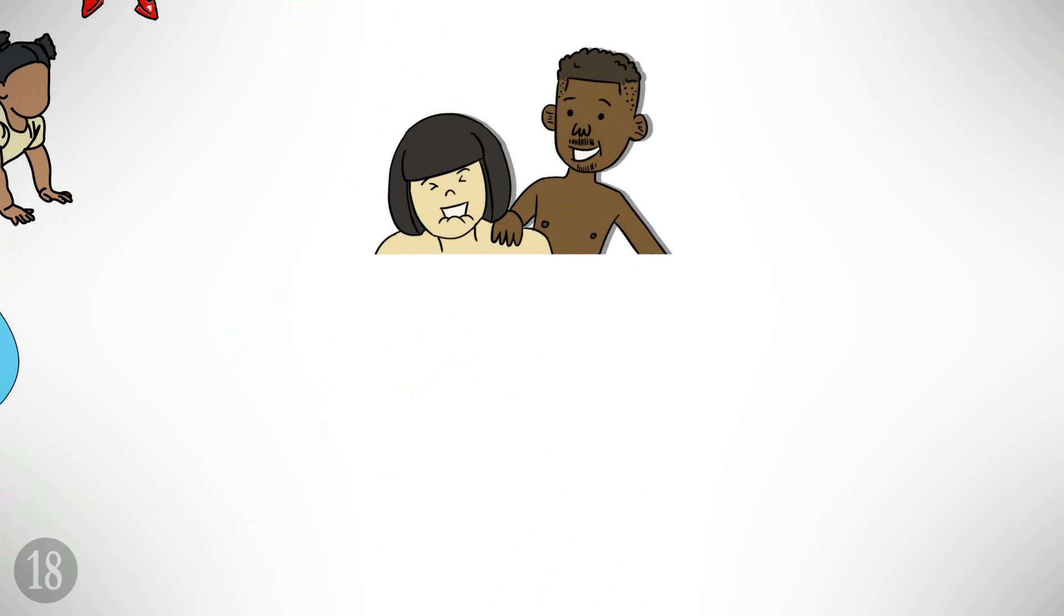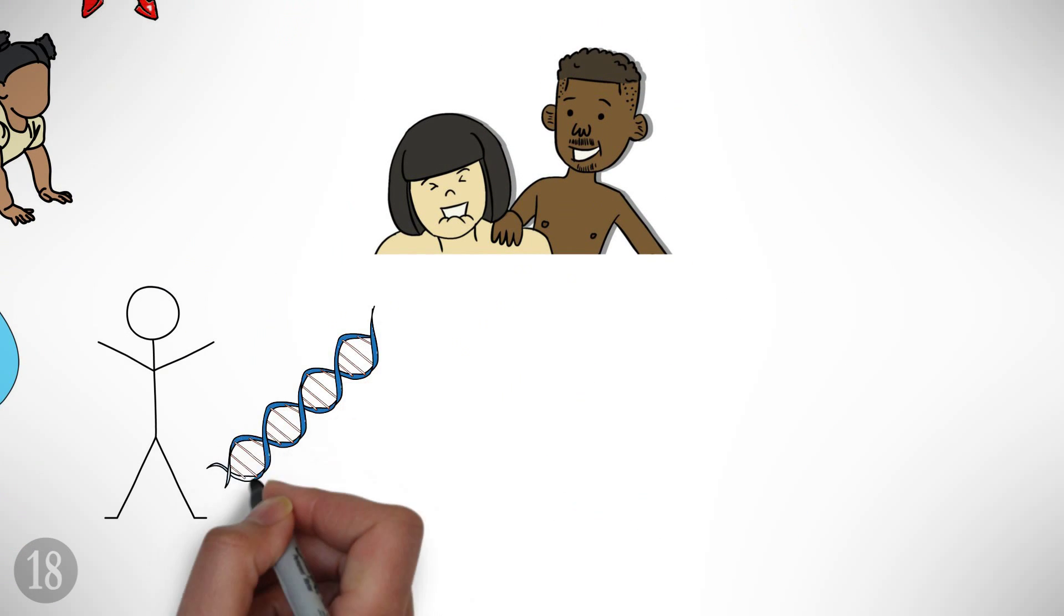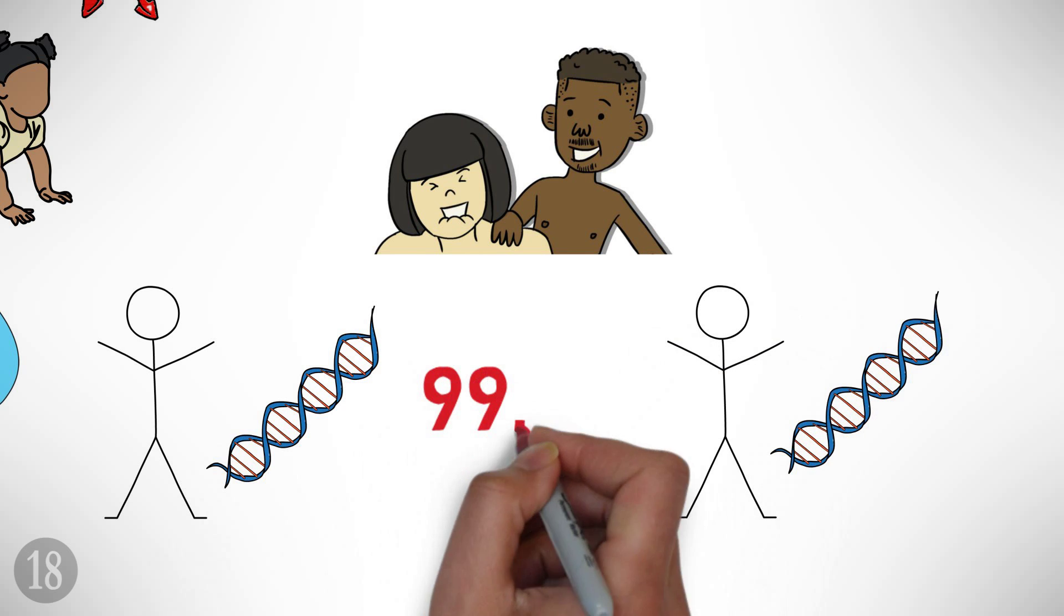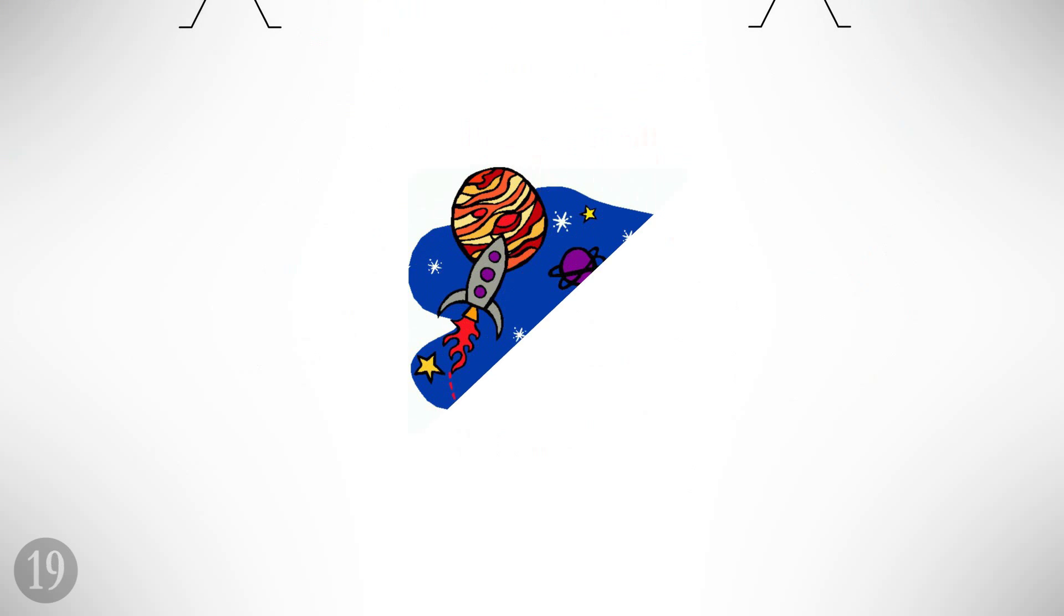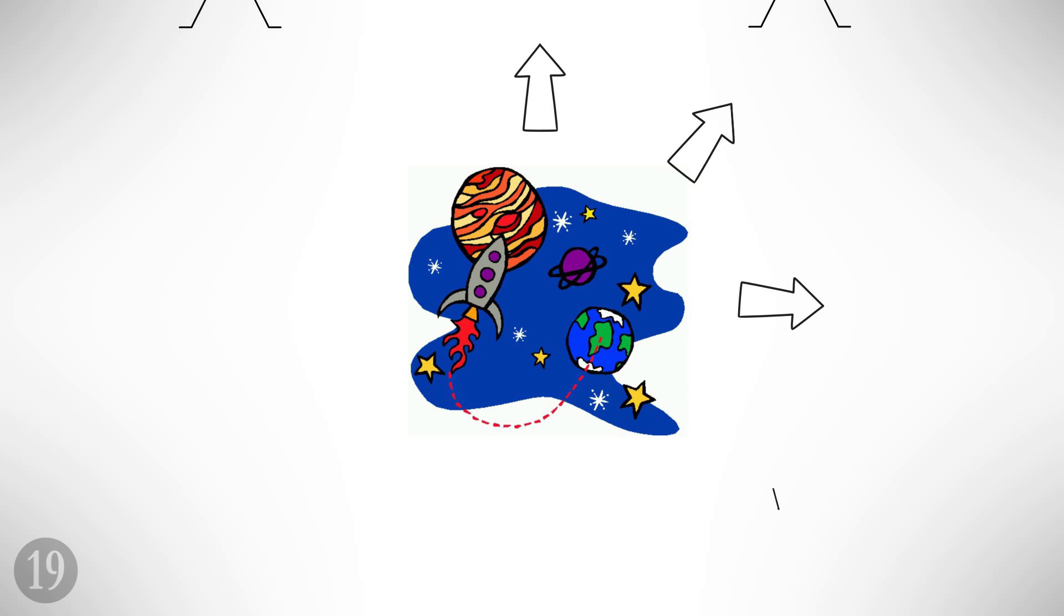Number eighteen: you couldn't be here without a little incest. Compare your genes with any other human beings, and on average, they will be about 99.9% the same. Number nineteen: when the universe expands, it won't be spreading out to fill a larger emptiness. The only space that exists is the space it creates as it goes.